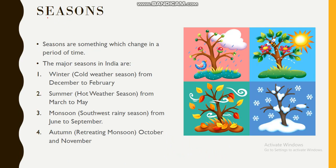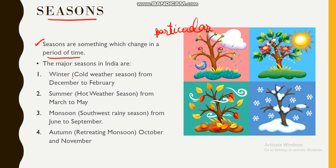Now let's talk about seasons. Seasons are something which change over a particular period of time — like 3 months, 4 months, 5 months — but it's fixed. First comes winter, the cold weather season from December to February, which is 3 months. Then summer, the hot weather season from March to May — again 3 months.